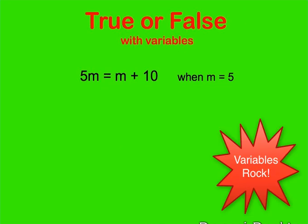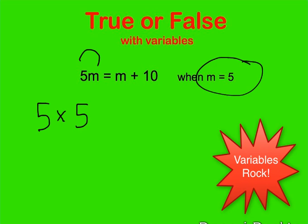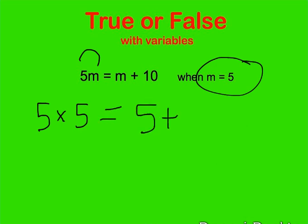Next question, true or false — we're plugging in 5 for m. The equation is 5m equals m plus 10. So we write 5 times 5, because a letter next to a number means to multiply, equals 5 plus 10. 5 times 5 is 25, and 5 plus 10 is 15. Does 25 equal 15? No, that is false.